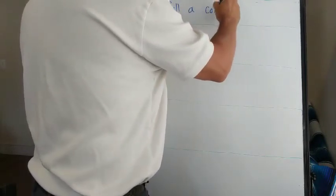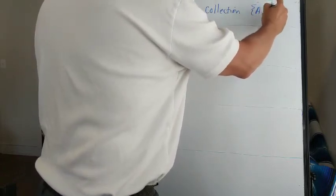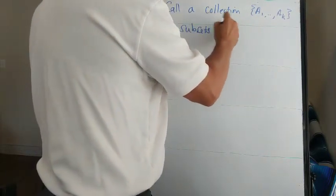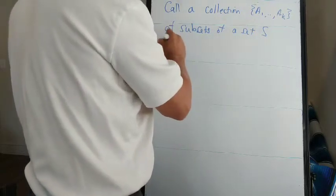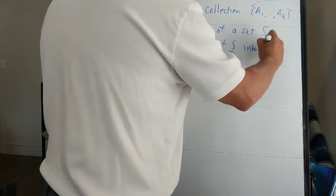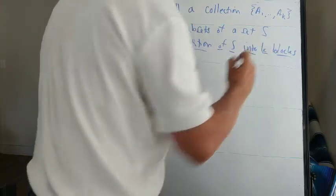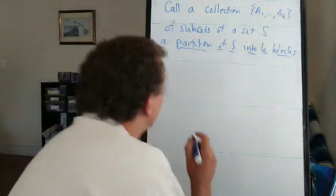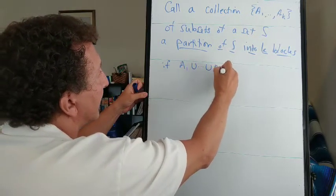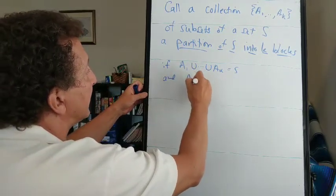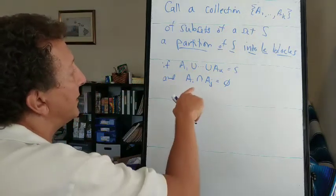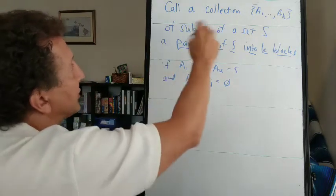So we call a collection A1 through AK of subsets of a set S a partition of S into K blocks if the union of all of these sets is S and the intersection of any two of them is empty. And actually require these subsets to be non-empty. So let me say a collection of non-empty subsets.